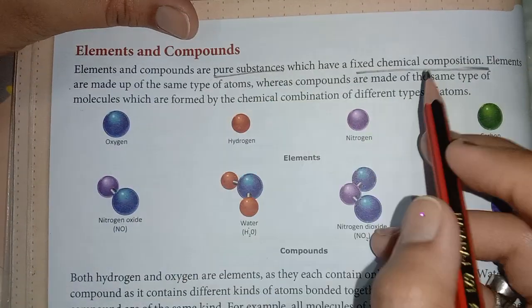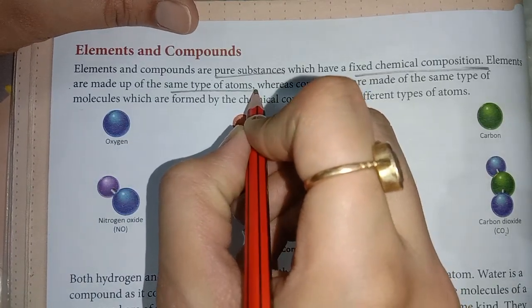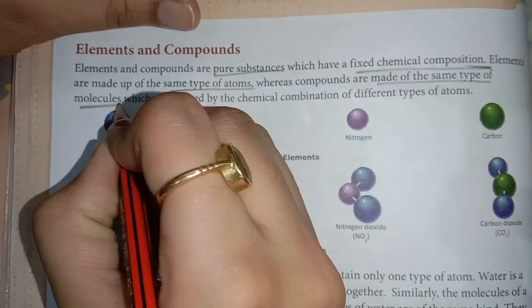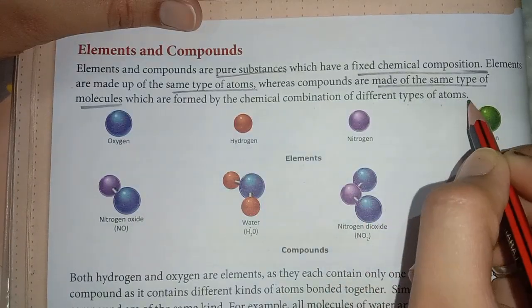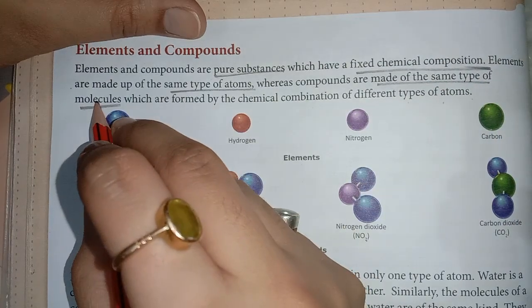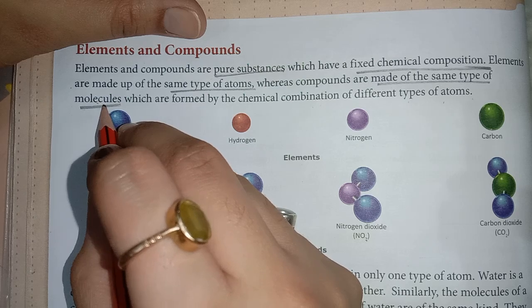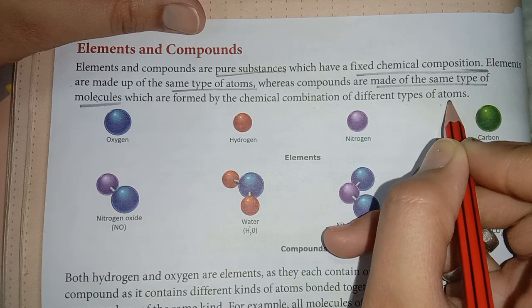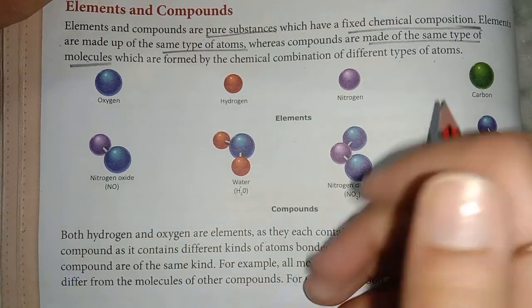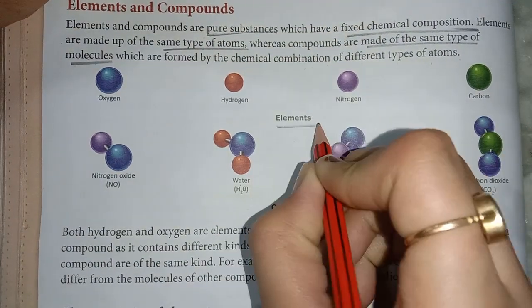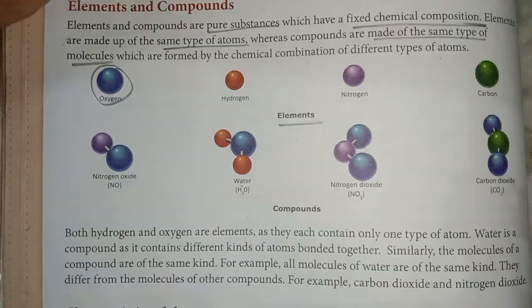Elements are made up of the same type of atoms. Compounds are made up of the same type of molecules, formed by the chemical combination of different types of atoms. To clarify: elements contain only one type of atom, while compounds are formed when two or more different types of atoms join together chemically.